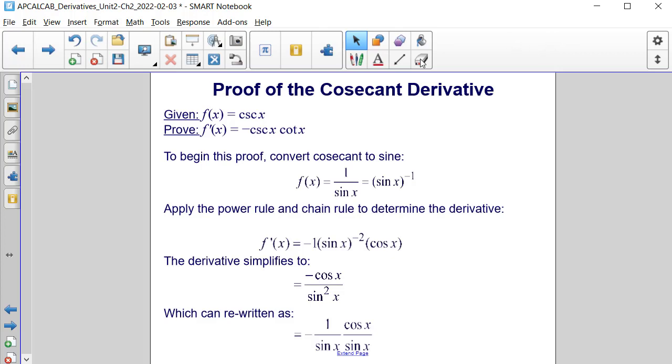Proof of the cosecant derivative. We are given that f of x is equal to cosecant of x. We need to prove that f prime of x is equal to negative cosecant x cotangent x.